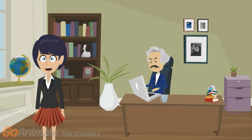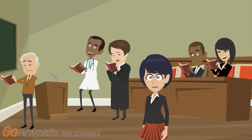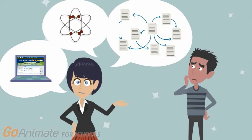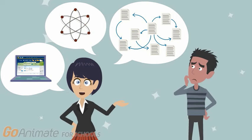Understanding a scholarly peer-reviewed article can seem daunting at first. After all, they are written by experts for other scholars and experts in that field. Many peer-reviewed articles explain a research study that was conducted to contribute new information to the field of study. In order to make sense of these articles, it might help to break them down and understand the parts of a research study.